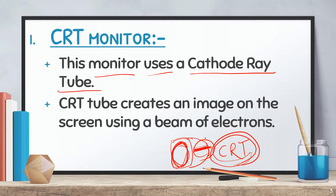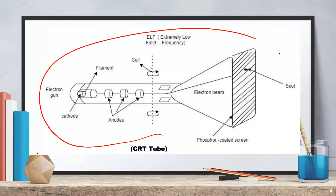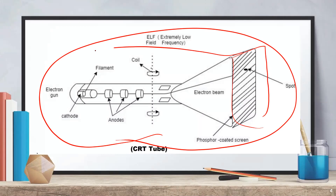Inside the CRT tube, the electron beam is used to generate the image and picture. If you need to see the diagram, you can see the CRT tube, the TV screen, and the cover. The CRT tube transfers electrons to the screen to form an image.